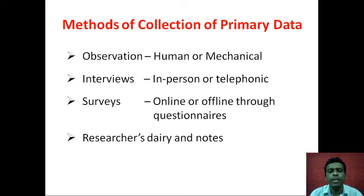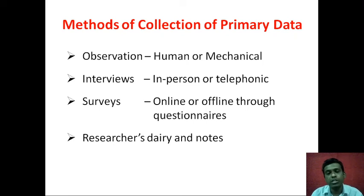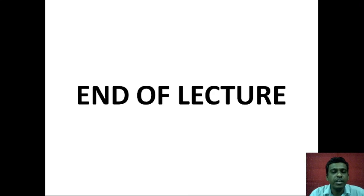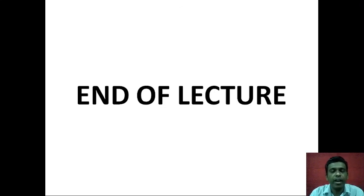The fourth type is researcher diaries and notes. When doing research, a researcher maintains a diary and notes, which can be used as primary data because the researcher himself has written it. These are the four main methods of collecting primary data. In the next lecture, we will discuss secondary data and other aspects of primary and secondary data.